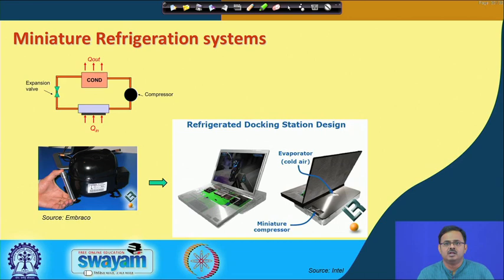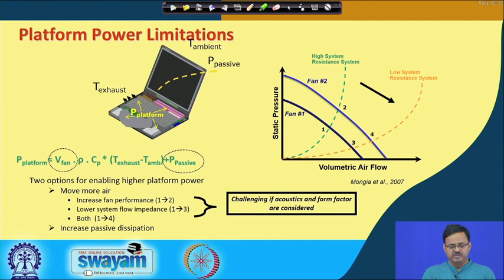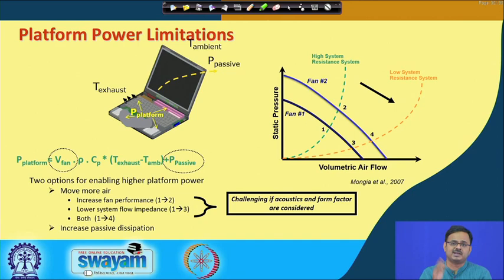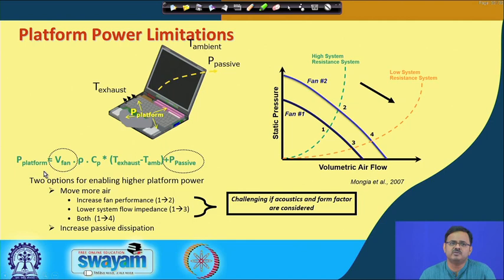The other option is to increase passive dissipation. One can think of ways to dissipate more heat through the keyboard or the screen. However, there are limits — if the keyboard palm rest gets too hot, you cannot operate it, and if the screen becomes too hot, the display quality is affected beyond a certain temperature. These are the main ways to increase system power, and that is the challenge.